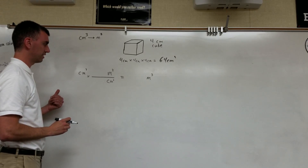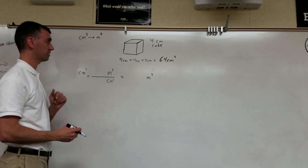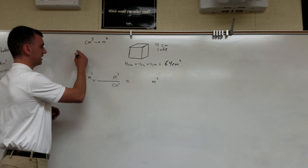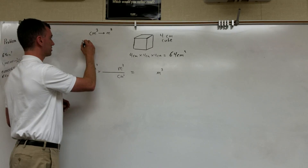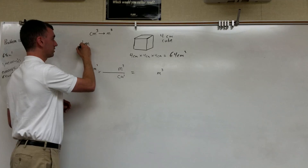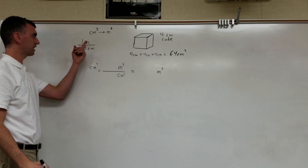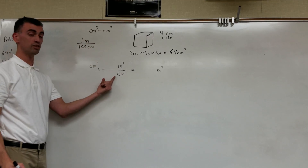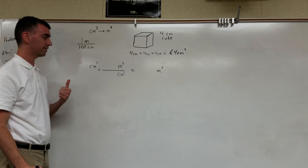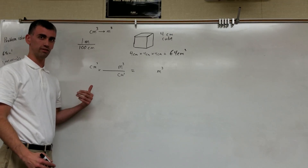Now we need to figure out the relationship between cubic meters and cubic centimeters. All we know is that one meter equals 100 centimeters. But a meter is different from a cubic meter, and a centimeter is different from a cubic centimeter. We're going to take advantage of the fact that a unit can behave like a number — just as units can cancel, if you cube a unit, you get the unit cubed.